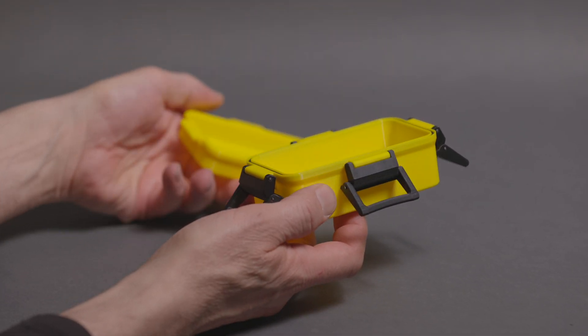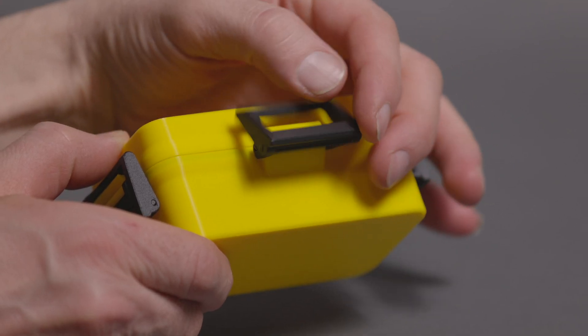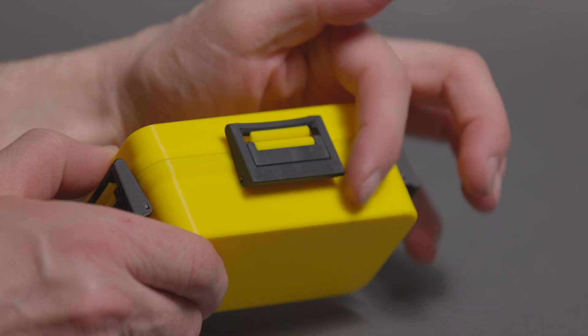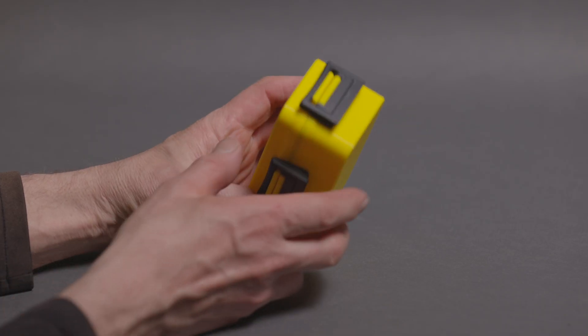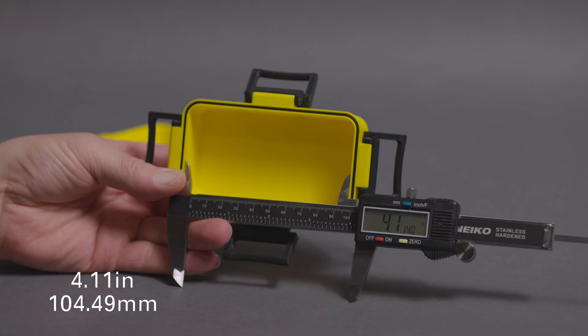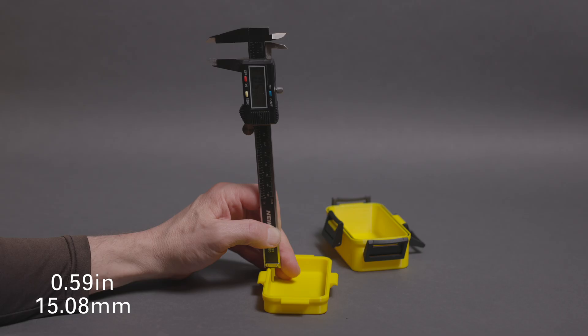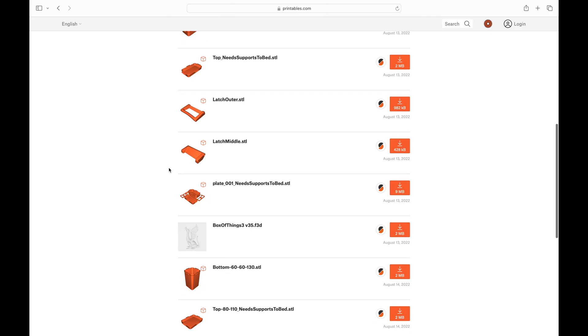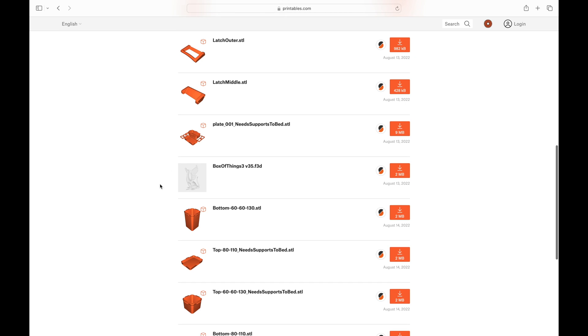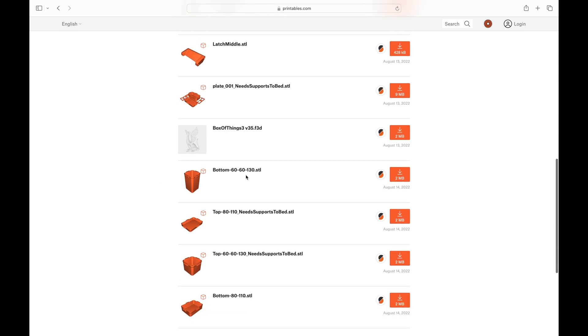This case uses a piece of TPU for the seal along with a satisfying two-part latch. It also happens to be the only case we tested that latches on all four sides. The dimensions shown here are for his most popular downloaded case, but if you like the design, he offers three standard sizes along with the option to go in and modify the files as needed.